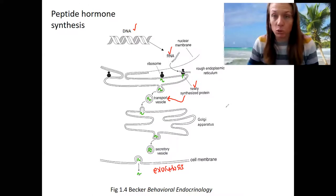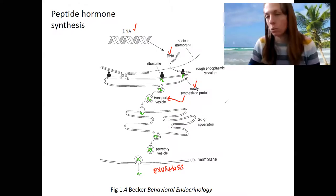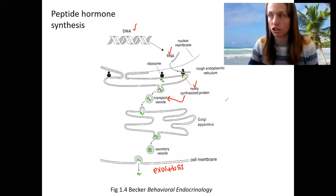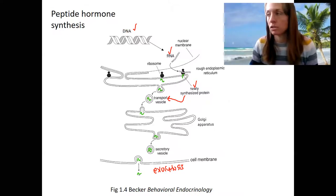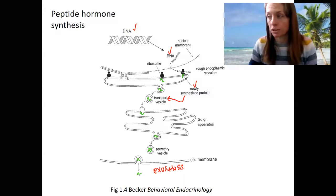What's really cool is these peptide hormones are encoded by our genes. So you have a gene for the vasopressin hormone, for CRH, for ACTH — these are all ones you'll see. And so they can be regulated as to whether they're produced or not.